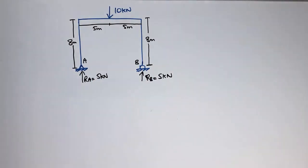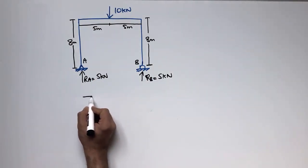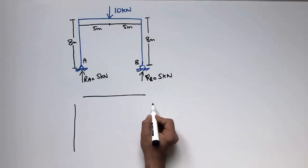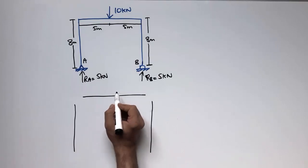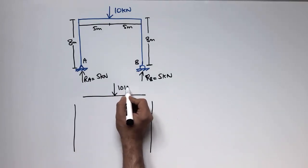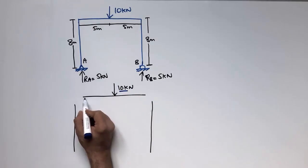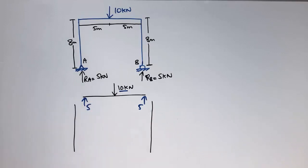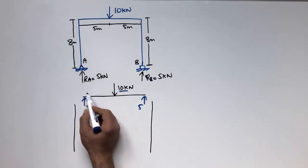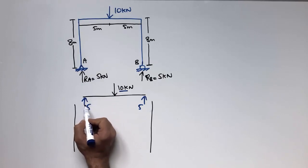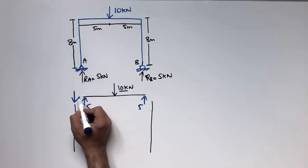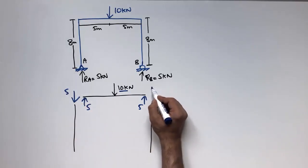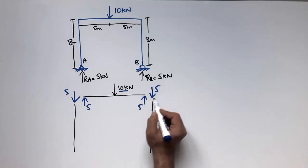First, I draw the reference lines for the frame — this is the beam and these are the two columns. The 10kN load acts at the center of the beam, so 5kN is taken by each end. Since this is a fixed joint, the 5kN will also be transferred into the column end but in the opposite direction, keeping the joint in equilibrium.